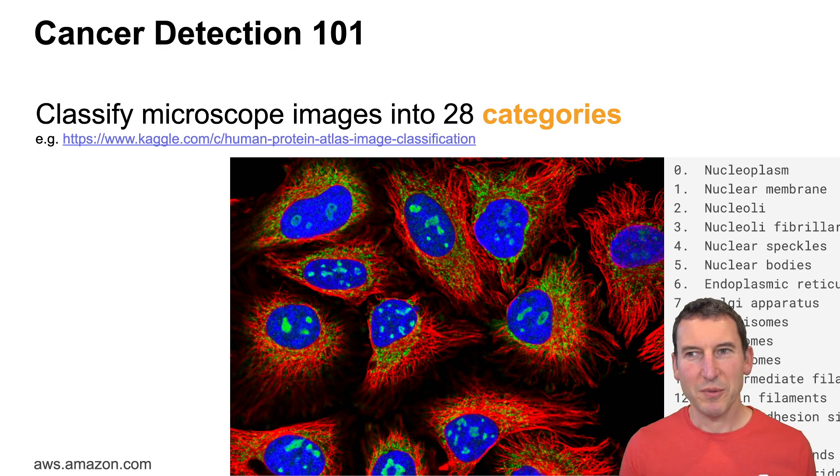Now besides regression there are a lot of other estimation problems. For instance, you could get a task of classifying microscope images into 28 categories, for instance on the protein atlas image classification task on Kaggle. Here are some examples of different pieces of a cell that you need to recognize, whether these are a Golgi apparatus or a lysosome. If you're a good biologist you will just squint and say yeah that looks like peroxisomes.